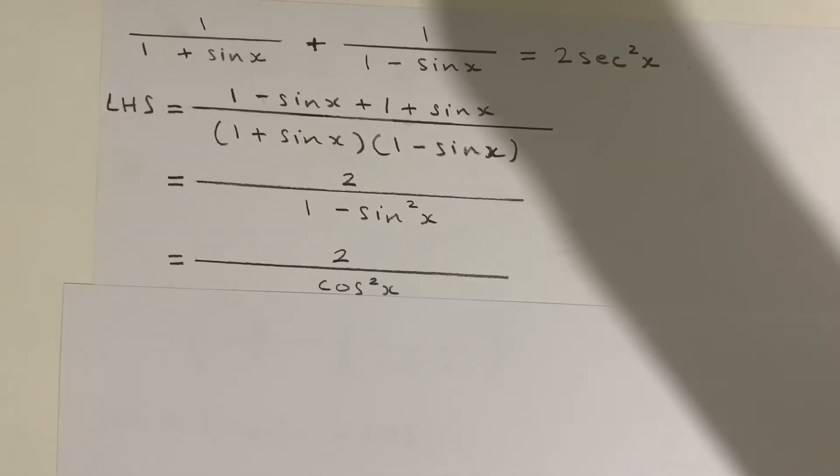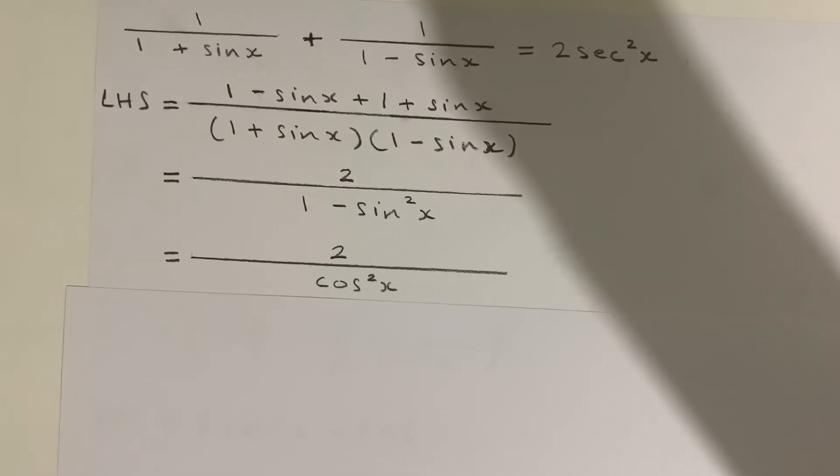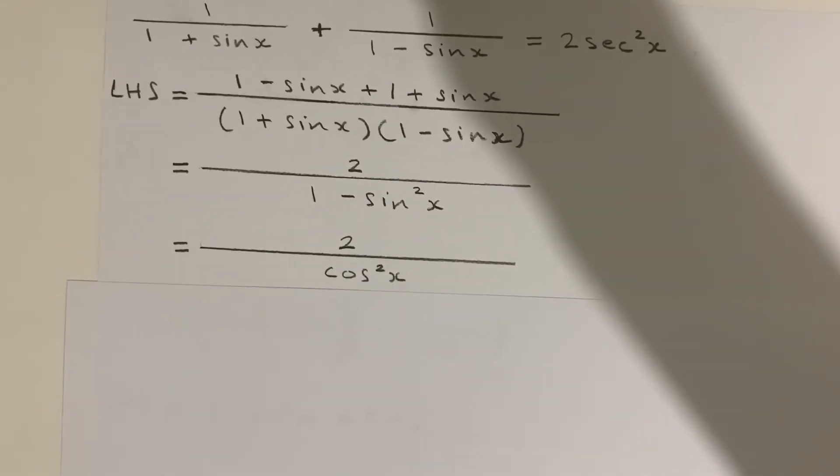Now on the next step the denominator has changed, so one minus sine squared x is actually just cosine squared x.